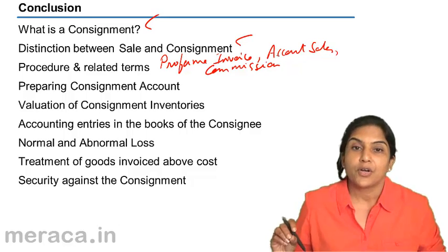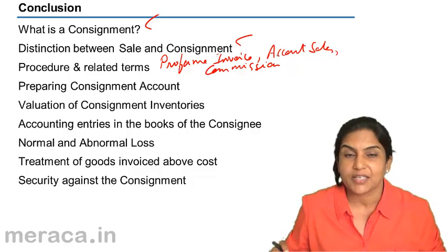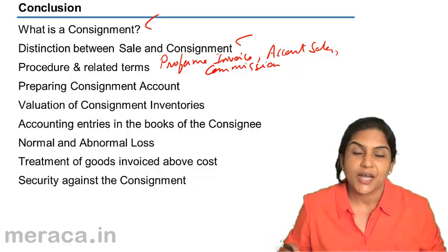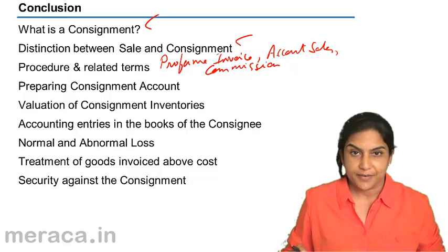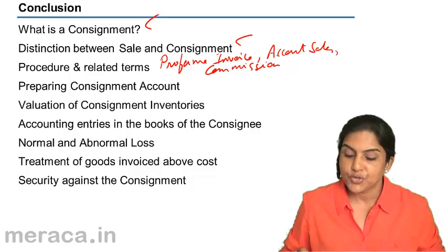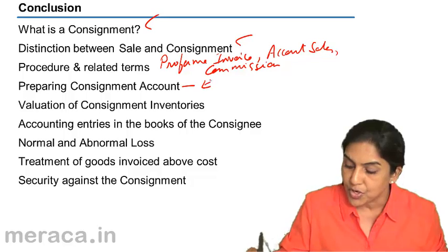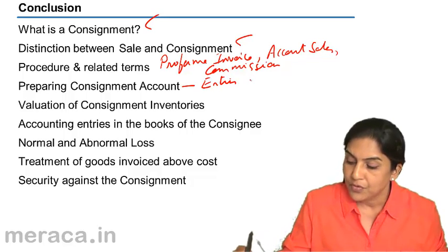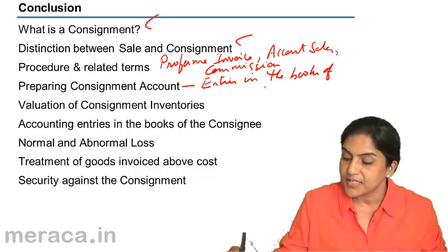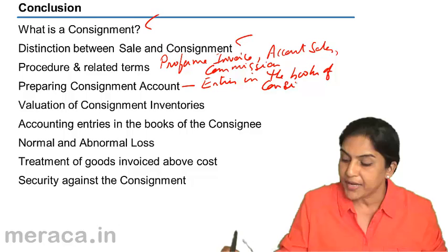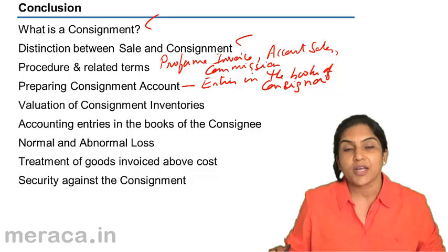Overriding commission is also applicable when goods are sold by the consignee at a price much higher than that expected by the consignor. Next, we went on to accounting entries — accounting entries in the books of the consignor. The consignment account is prepared in the books of the consignor in order to ascertain the profit and loss of the consignment.